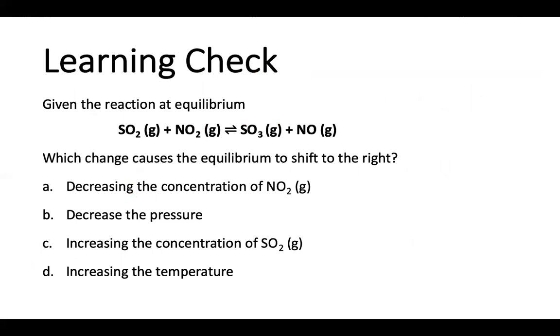So really quick, I want to give you a learning check. Given the reaction at equilibrium, SO2 plus NO2, both as gases, the forward reaction is leading us to SO3 gas plus NO. Now these two are in fact balanced, so you don't need to do any stoichiometry here. Which change causes the equilibrium to shift to the right? Is it decreasing the concentration of NO2, decreasing the pressure of the reaction, increasing the concentration of SO2, or increasing the temperature?